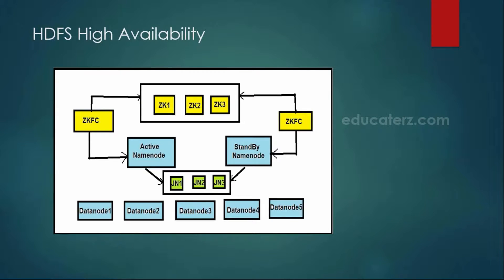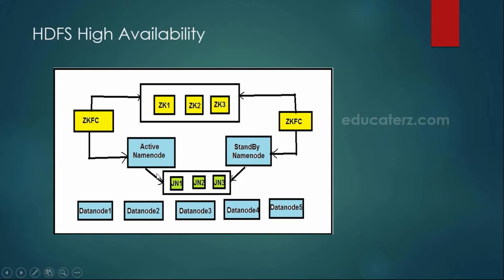As part of HDFS high availability, as the name itself says, you have a high availability cluster. That means in case one of your name nodes goes down, your standby name node will be available and it will be taking care of your entire cluster. Here you can have manual failovers and automatic failovers as well. Automatic failovers mean that in case your active name node goes down in the middle of the night, the administrator need not log in and start any other services. As part of your automatic failover, the system will take care of starting the standby name node, and your standby name node will be taking care of your entire Hadoop cluster.